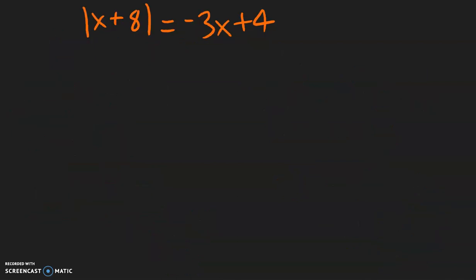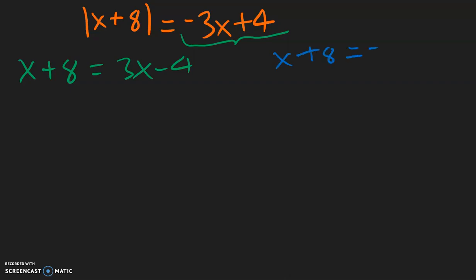For this example, we begin by writing the two equations. The first one will be x plus 8 equal to — and now remember to change the sign of everything on this side. Negative 3x becomes positive 3x, positive 4 becomes negative 4 — that's the first equation. In the second equation, nothing changes: x plus 8 is equal to negative 3x plus 4.